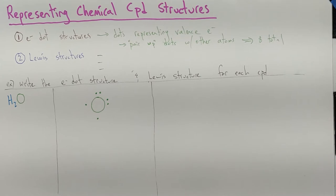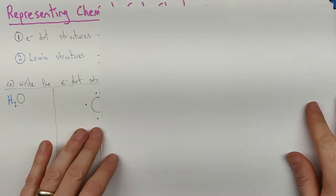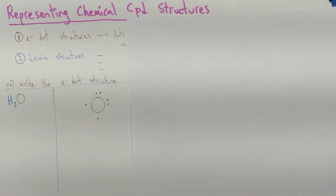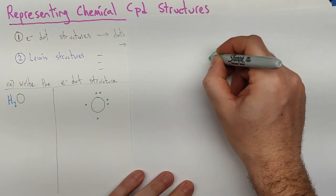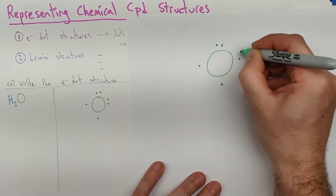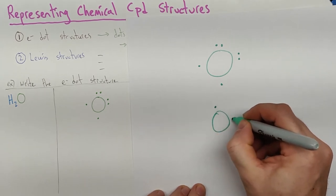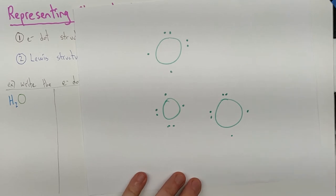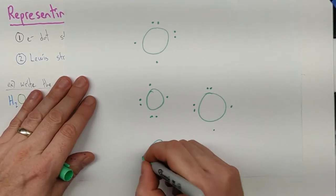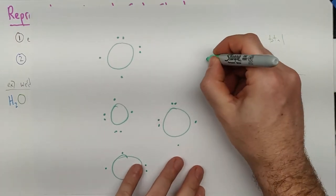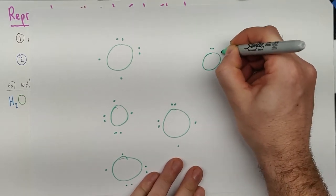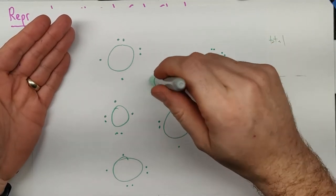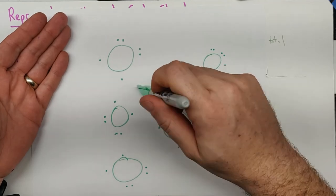I'm going to save you a lot of stress by clarifying that these dots — it does not matter where they are. All that matters is how many pairs and how many singles you have. Oxygen has six dots and it could be arranged many different ways; they all mean the same thing. What matters is seeing two potential bonding locations and two non-potential bonding locations. Pairs of dots aren't going to bond; single dots are going to bond.